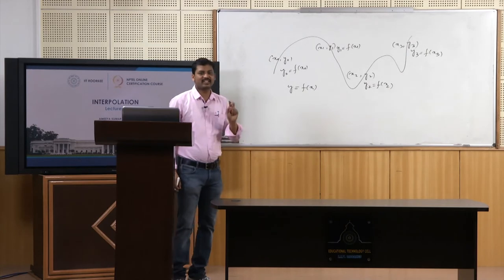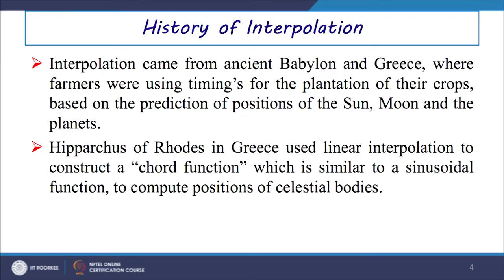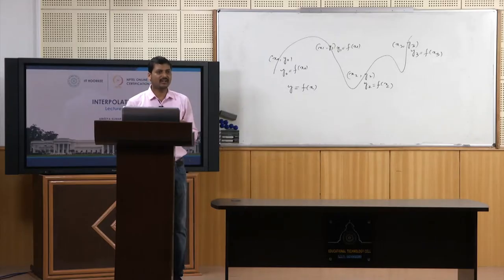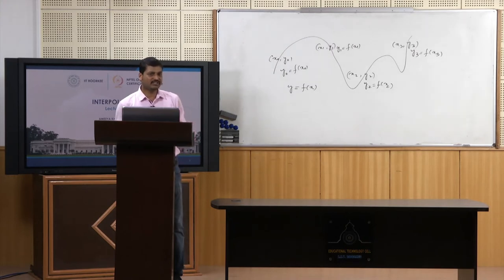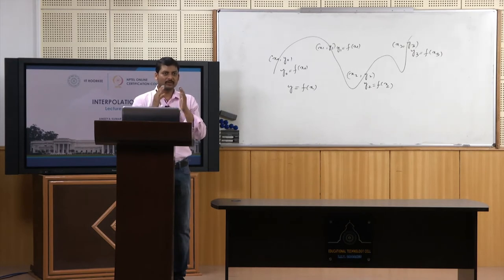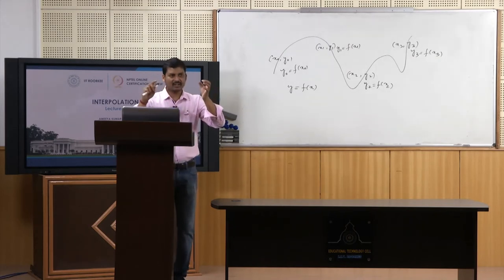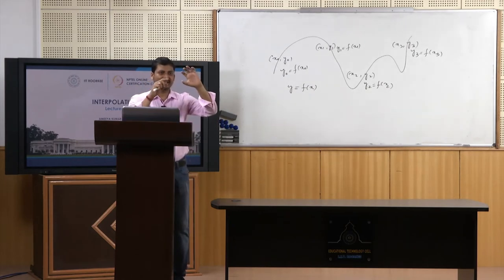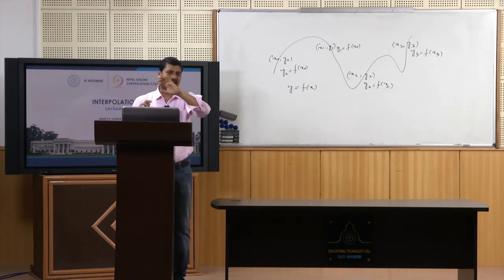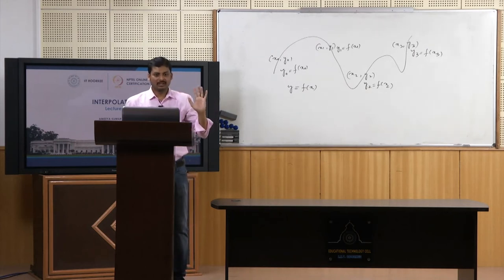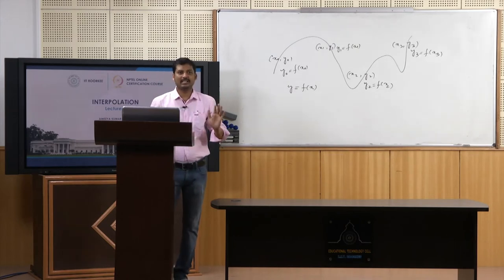Before going into interpolation, we will discuss a brief history. Interpolation came from ancient Babylon and Greece, where farmers used it for the prediction of positions of the sun, moon, and planets to plan their crop plantation. In India also, farmers started harvesting their crops based on the monsoon months like June or July.